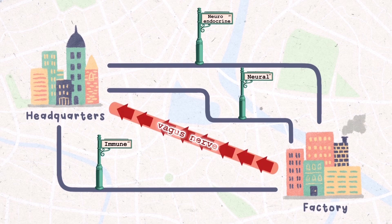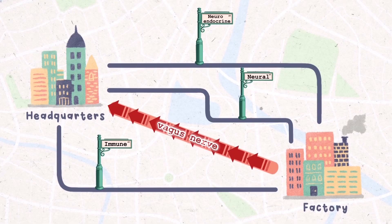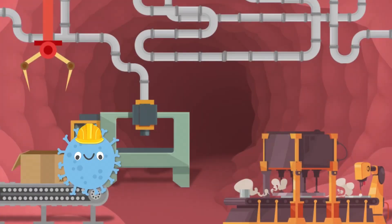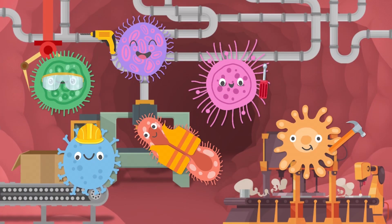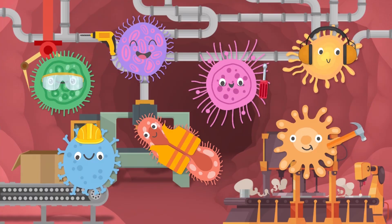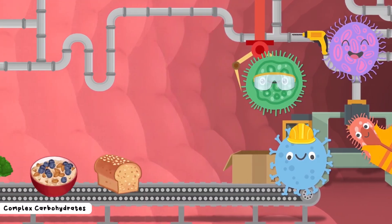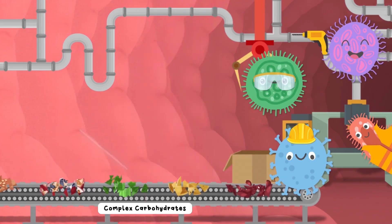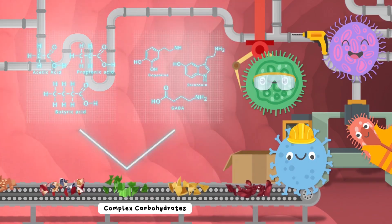The surprise? 80% of vagal fibers are afferent, meaning the majority of signals travel from the gut to the brain. Inside the gut factory, trillions of bacteria, archaea, and fungi work 24-7 shifts. These gut microbes break down food shipments to produce compounds like short-chain fatty acids and neurotransmitters, or their precursors.